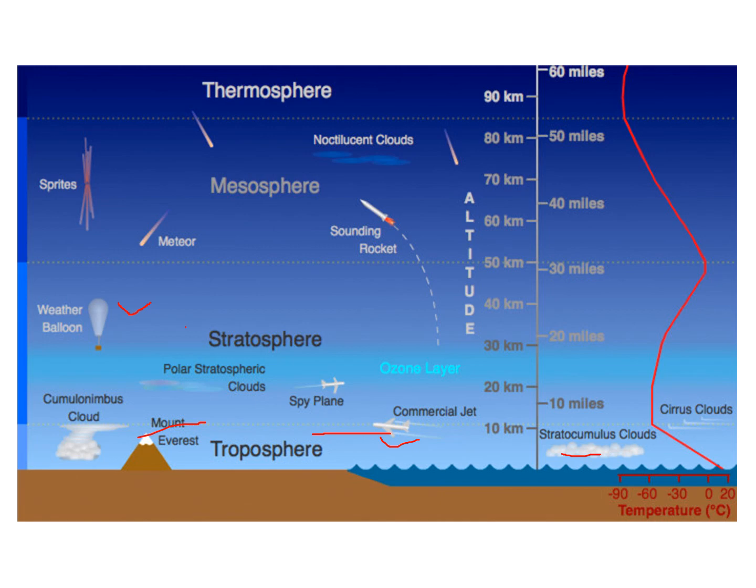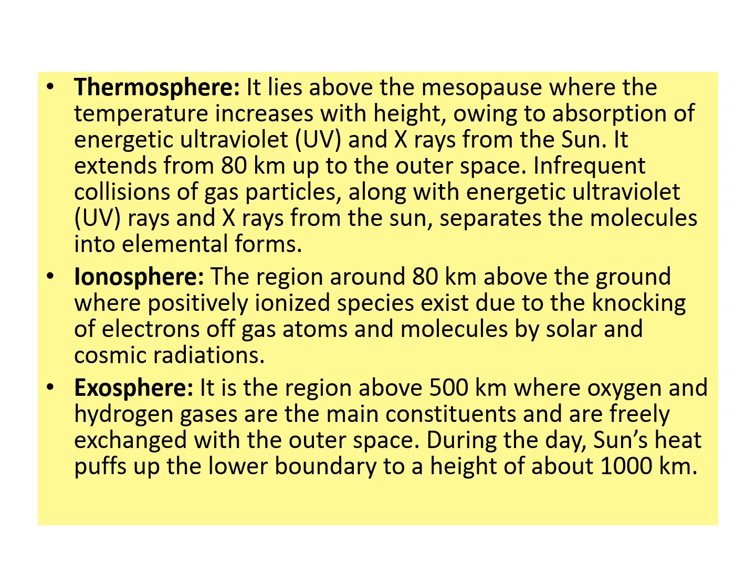The next layer is the thermosphere, which lies above the mesosphere. Temperature increases again with height due to the absorption of energetic UV rays and X-rays from the sun. It extends from 80 km up to outer space and does not have any particular boundary — it merges into outer space.